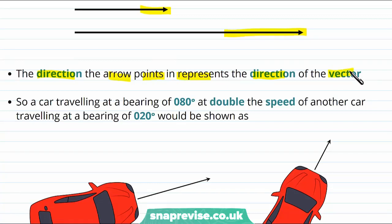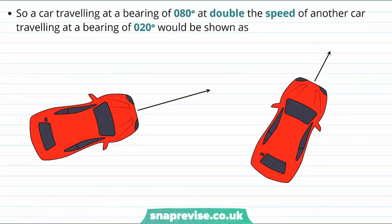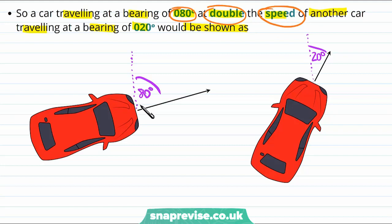Let's now take a look at an example of two cars with two different velocities and see how the arrows that represent their vectors look. Let's imagine we have one car travelling at a bearing of 80 degrees and at double the speed of another car which is travelling at a bearing of 20 degrees. The car on the left has a velocity whose bearing is 80 degrees. And the car on the right has a velocity with a bearing of 20 degrees. And then to show that the car travelling with a bearing of 80 degrees has double the speed of the other car, we have drawn an arrow that has double the length of the other car.